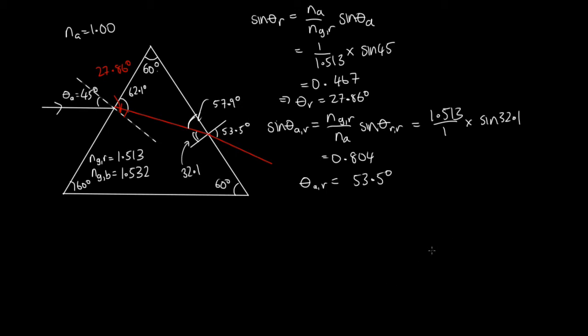Now what we need to do is repeat this process for the blue light. So we've got the sin θr for the blue light. So this white beam consists of red and blue light. So it's got the same angle of incidence there. It's equal to na over ng for the blue light times sin θa. And so this is equal to 1 over 1.532. So this is a refractive index for blue light times sin 45.